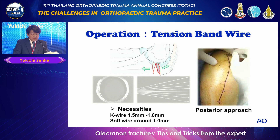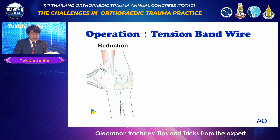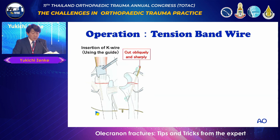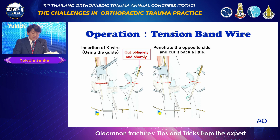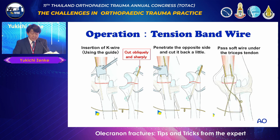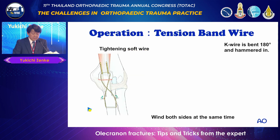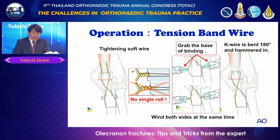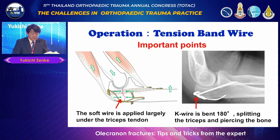For the posterior approach technique, only K-wire and soft wire are needed. Steps: reduction, making a bone tunnel, setting the soft wire. AO recommends two circles, binding simultaneously. Cut the K-wire obliquely and sharply. Penetrate the opposite side and cut it back a little. Pass the soft wire under the triceps tendon. When tightening the soft wire, not a single roll — balance at the same time is very important. Grab the base of the binding. K-wire is bent 180 degrees and hemmed in like a hairpin curve. The soft wire is applied broadly under the triceps tendon.